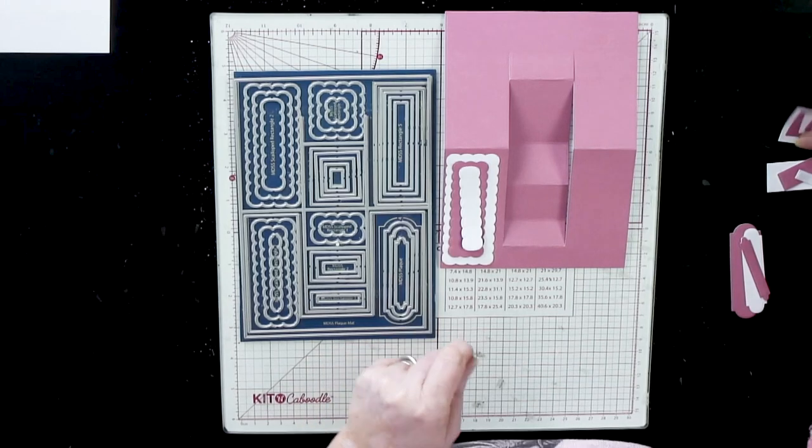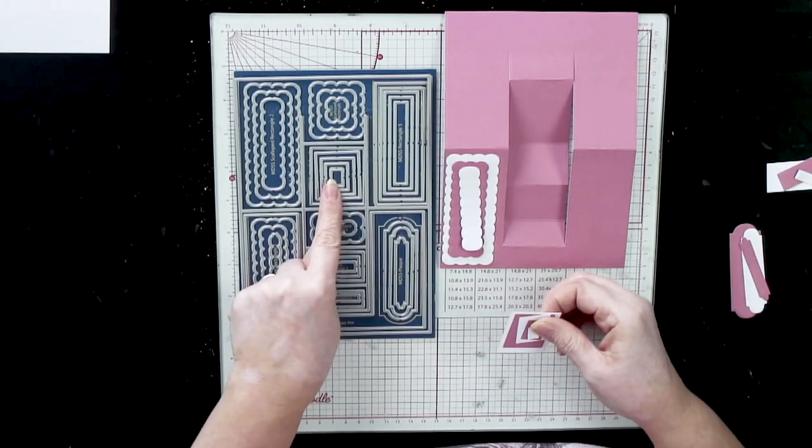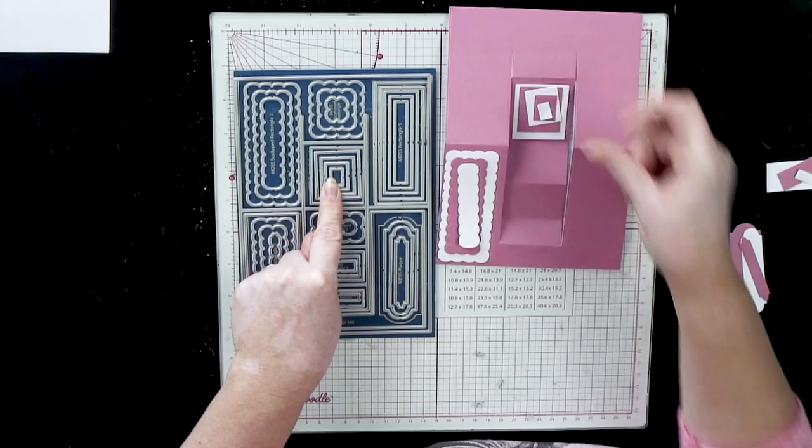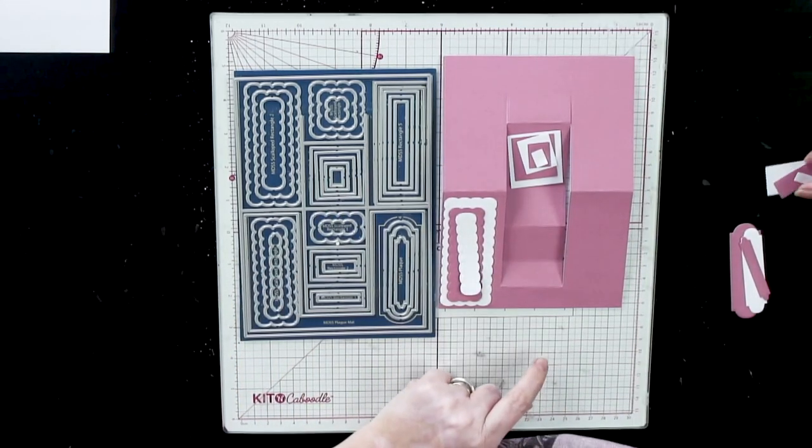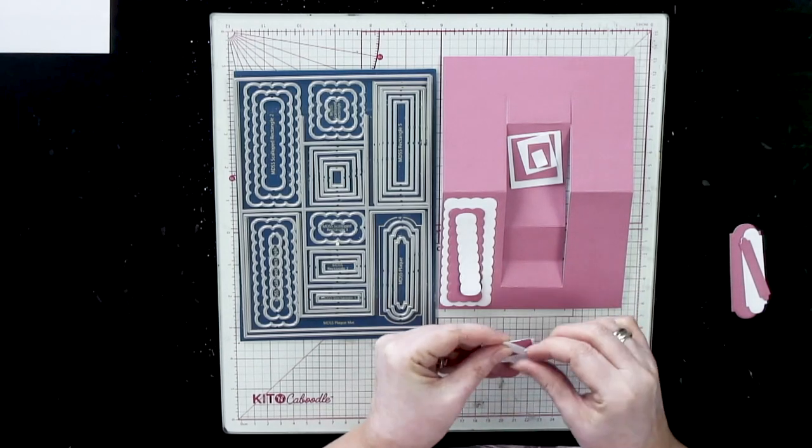Then also we've got the squares, which is these elements or the little rectangles that fit on there, and I've cut every one that's a mat layer. Or we've also got these pieces.